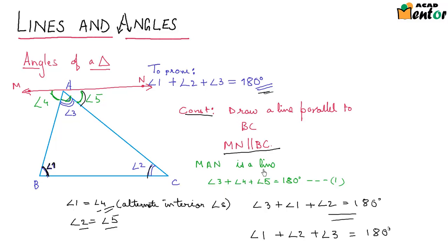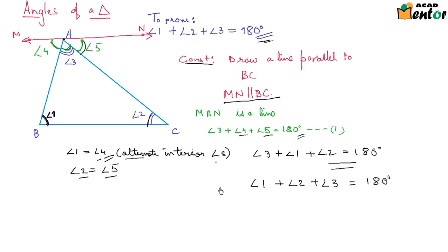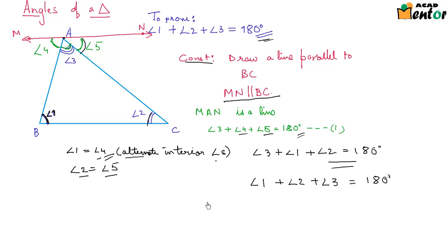We just draw a construction where MN is parallel to BC and passes through point A. Then we say the sum of angles on a line is 180, and replace angle 4 and angle 5 using the alternate interior angles property. So we have proved that the sum of angles of a triangle is 180 degrees. The theorem: the sum of angles of a triangle is 180 degrees.